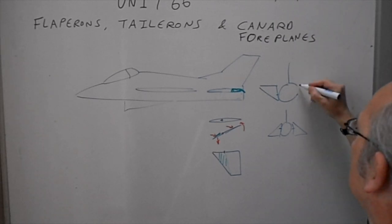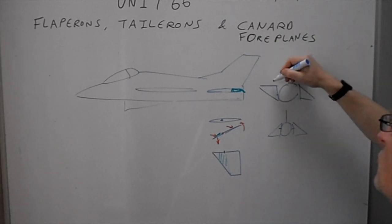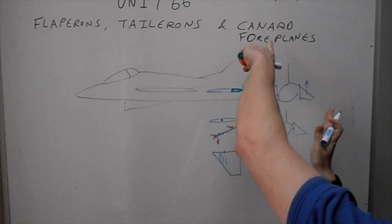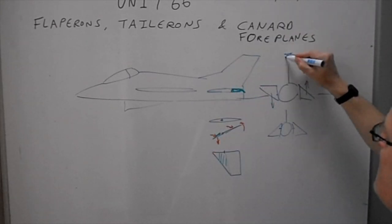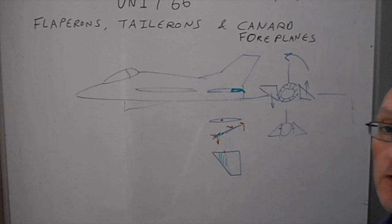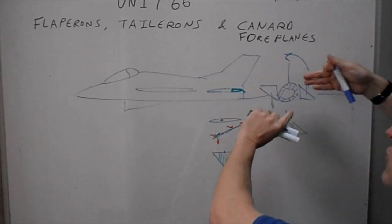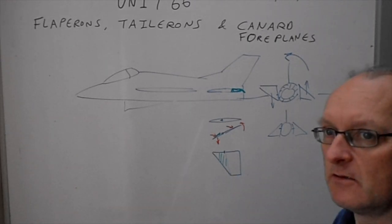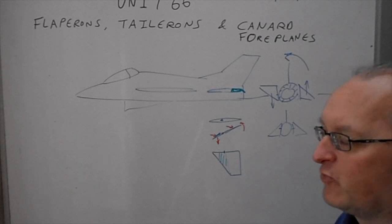With a taileron, what we can do is have one side up and one side down. Viewed from the back of the aircraft, one side pointing up produces a downforce there, the other side pointing the other way produces lift in that direction — so it twists and rolls the aircraft. The taileron can go up and down to control pitch, and one up one down to control roll — hence 'taileron,' like an aileron on the tail.